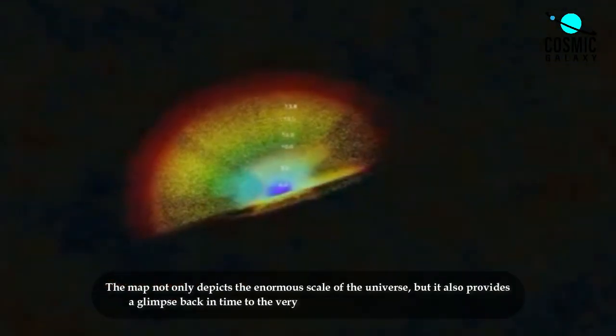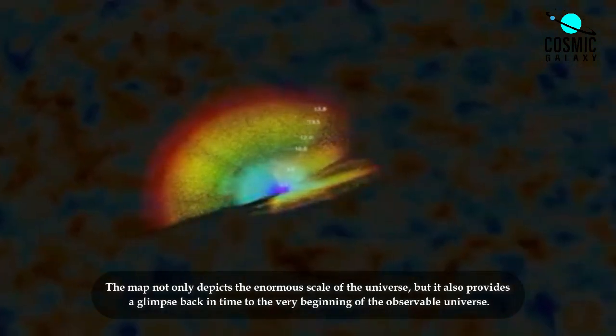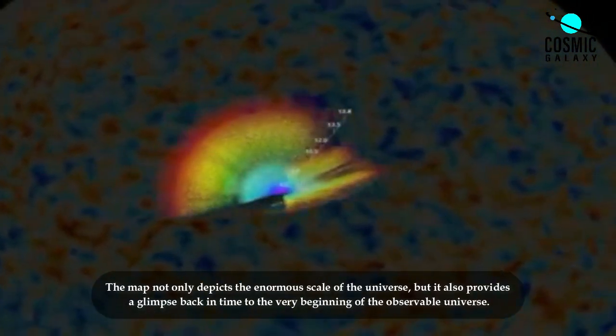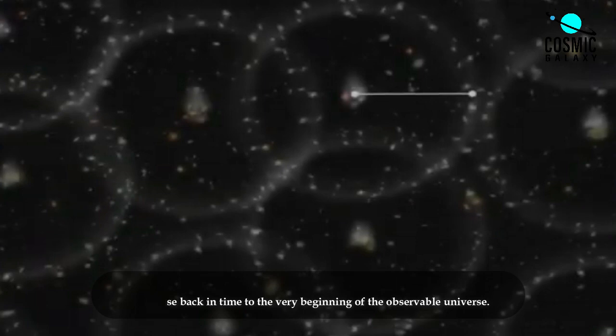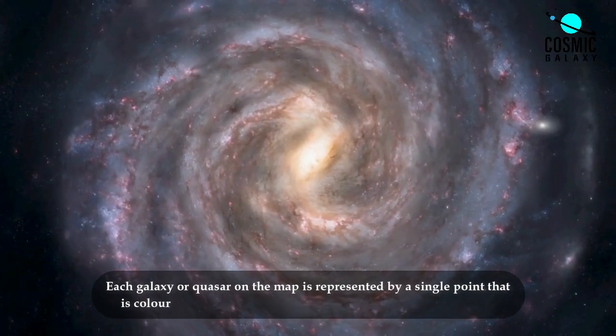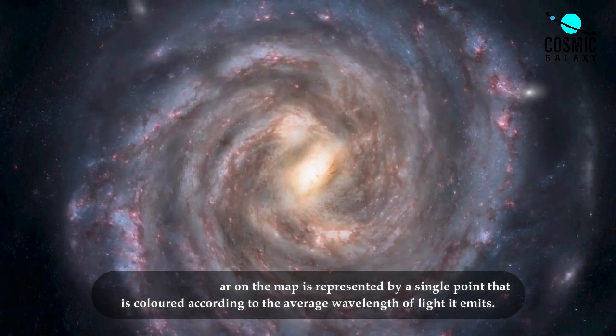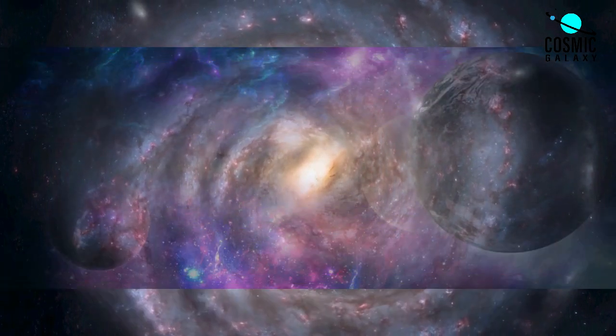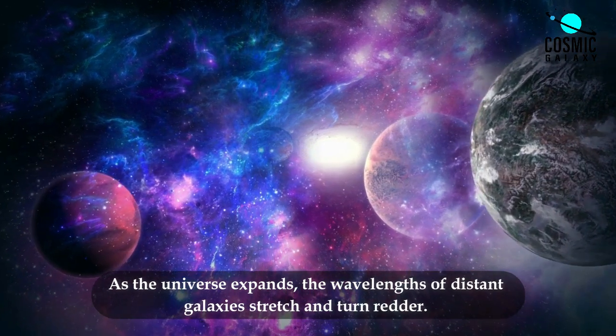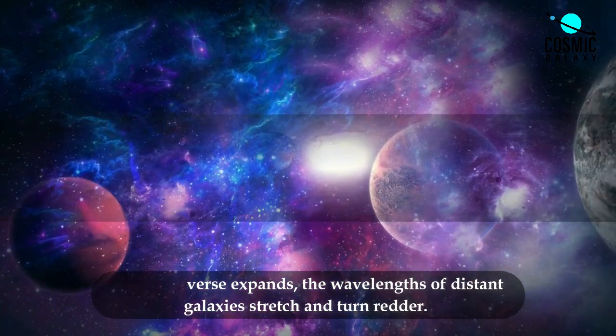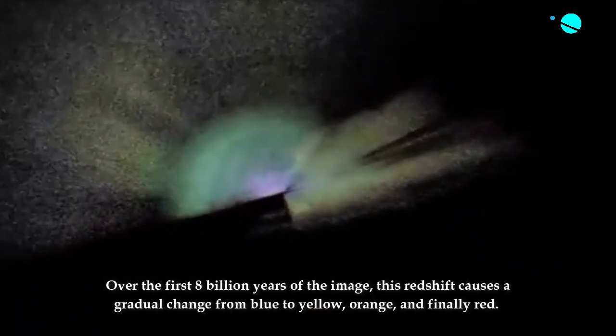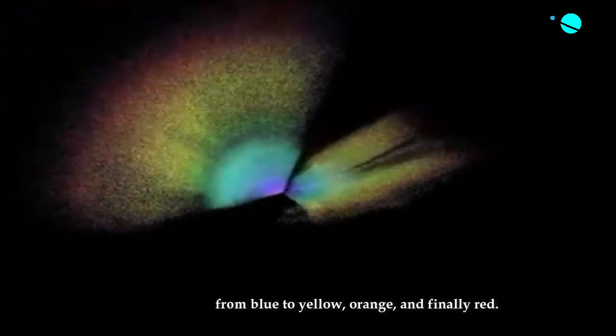The map not only depicts the enormous scale of the Universe, but it also provides a glimpse back in time to the very beginning of the Observable Universe. Each galaxy or quasar on the map is represented by a single point that is colored according to the average wavelength of light it emits. As the Universe expands, the wavelengths of distant galaxies stretch and turn redder. Over the first 8 billion years of the image, this redshift causes a gradual change from blue to yellow, orange, and finally red.